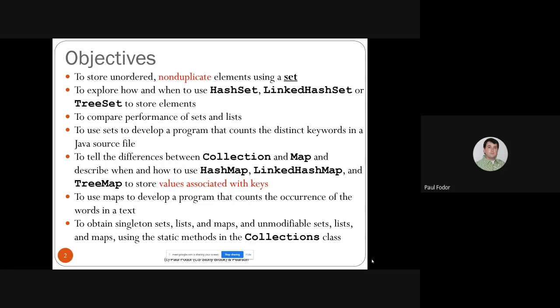There are two different hierarchies: the collections hierarchy and the map hierarchy. Map is used for the different kinds of dictionaries in Java. We'll have an example on how to use maps to count occurrences of words in a text — not only to keep distinct keywords but also to count the number of times each keyword appears. We'll also learn how to obtain singleton sets, lists, maps, and unmodifiable sets, lists, and maps using the static methods in the Collections class.